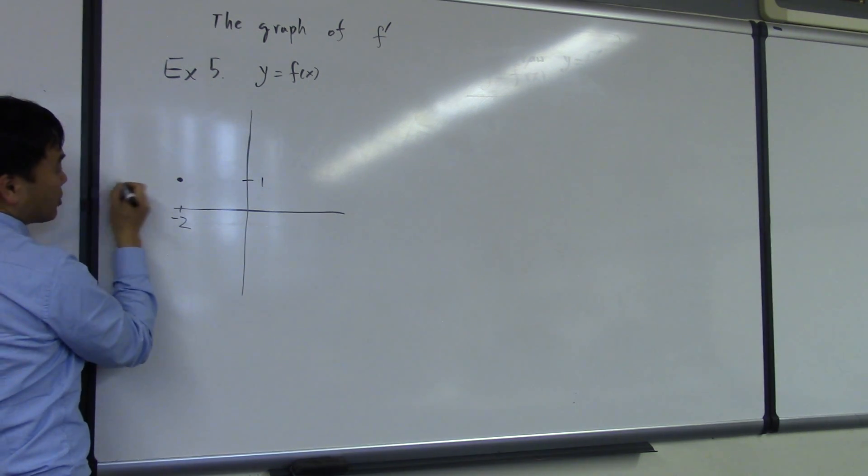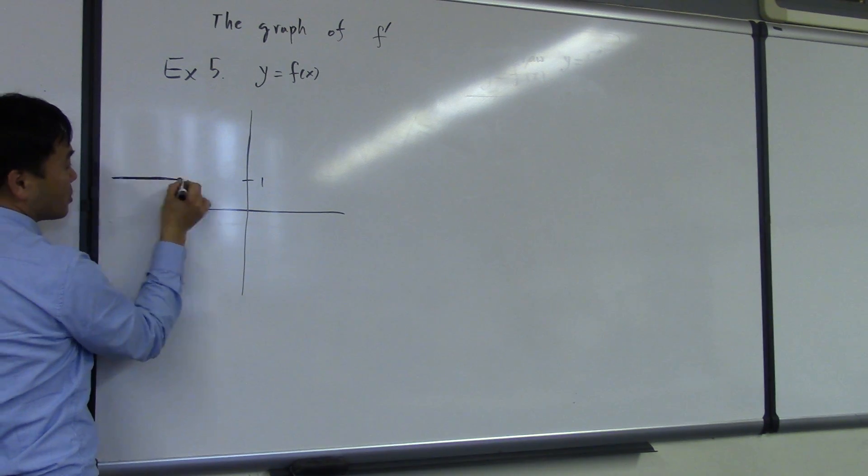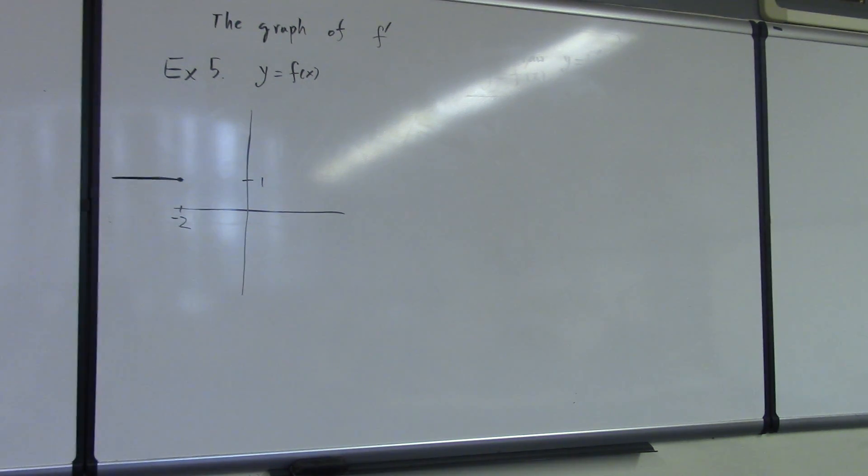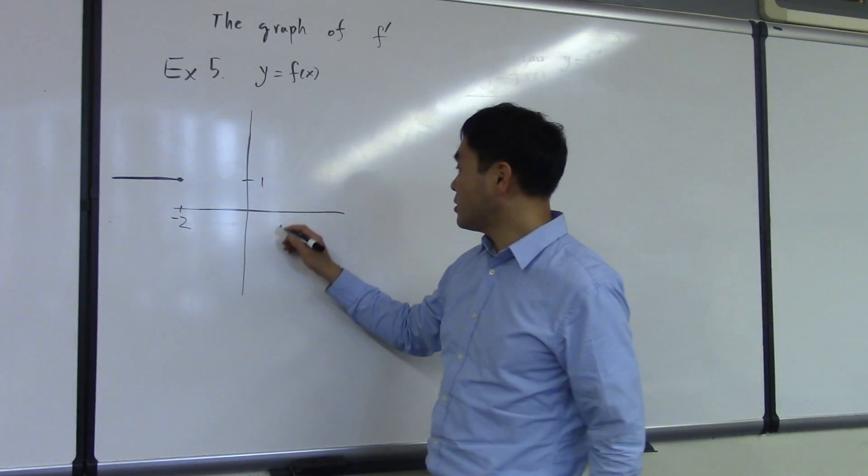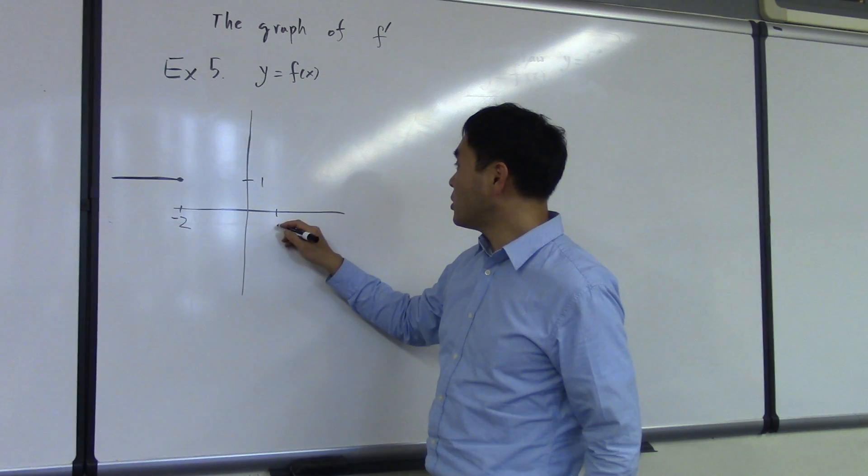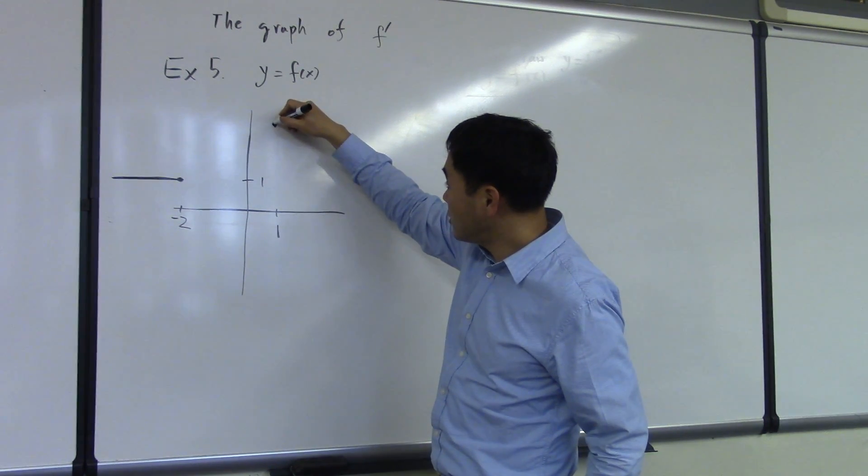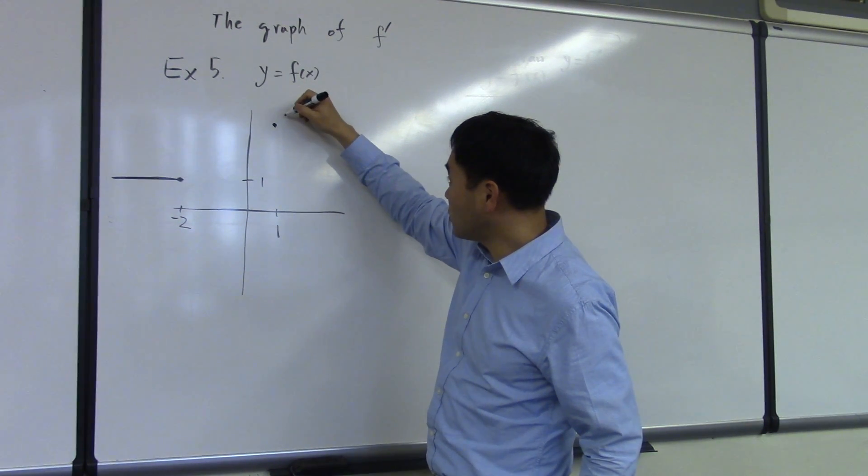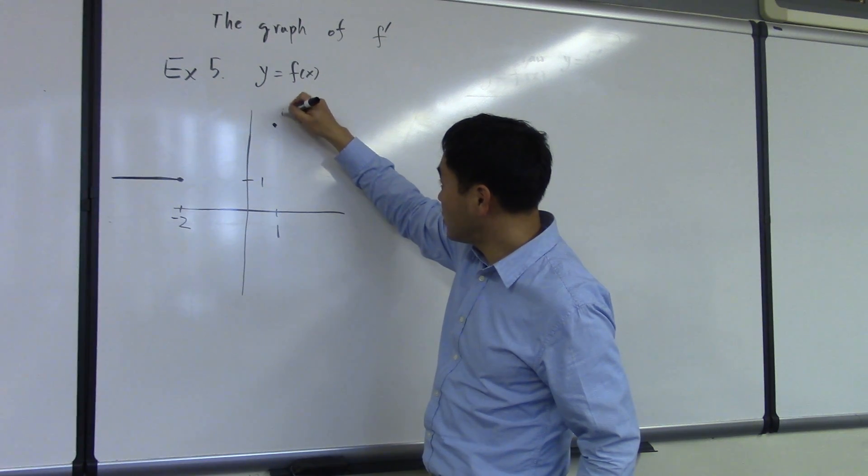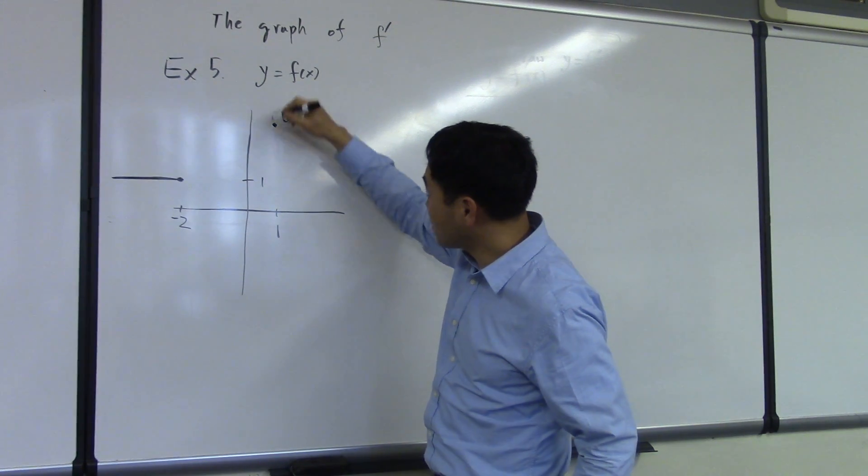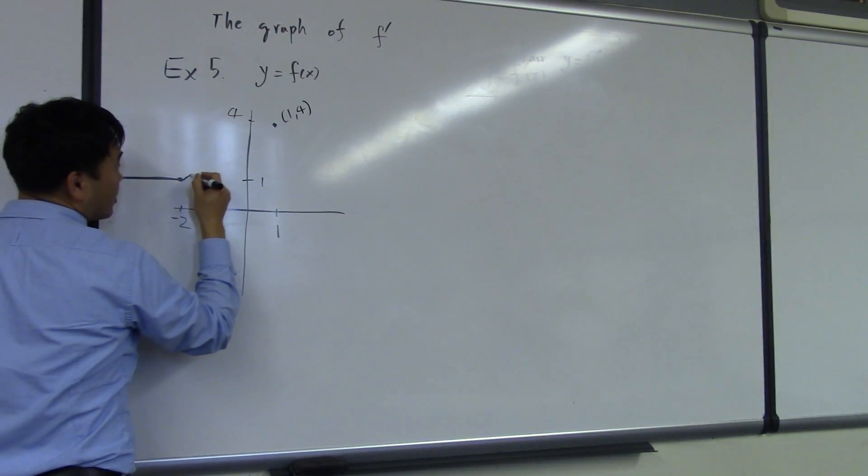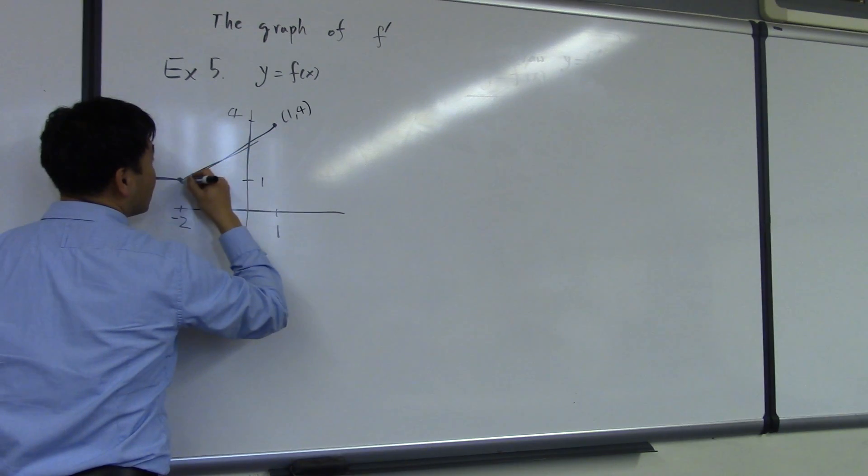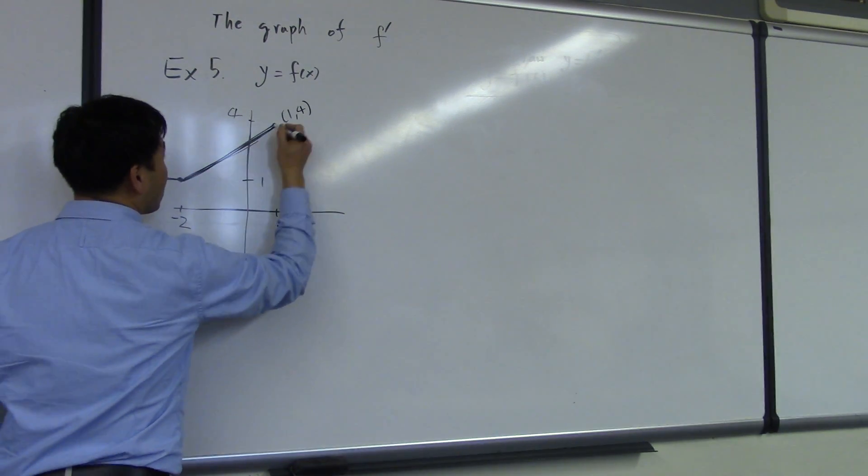And before negative 2, it's a straight line coming from the left. And then we will say that until 1, let's say 1 comma 4, let's say this is 4, it's a straight line.